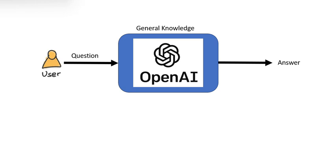Now suppose that you want to know something specifically from your own data. It could be a book, a PDF, a text file, or your own marketing data in a specific database.